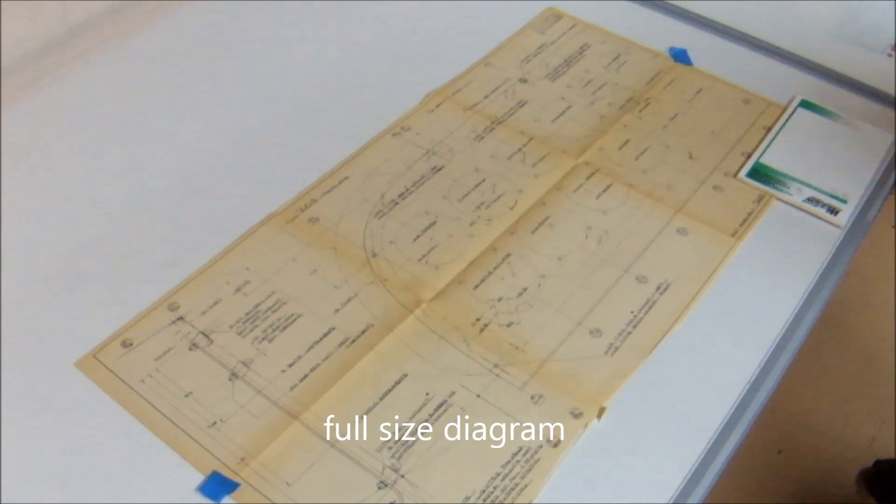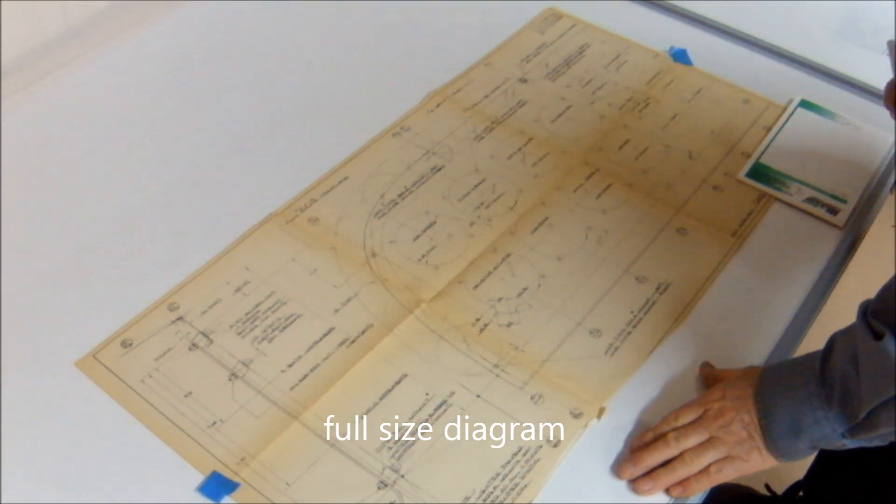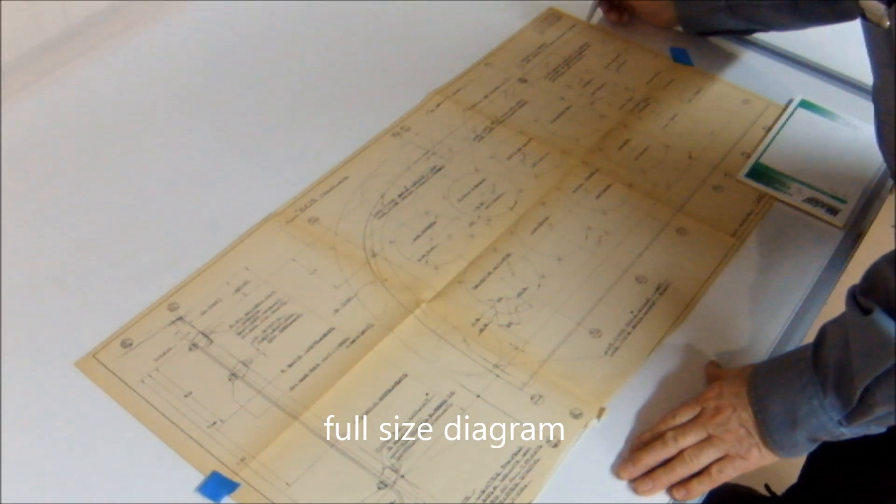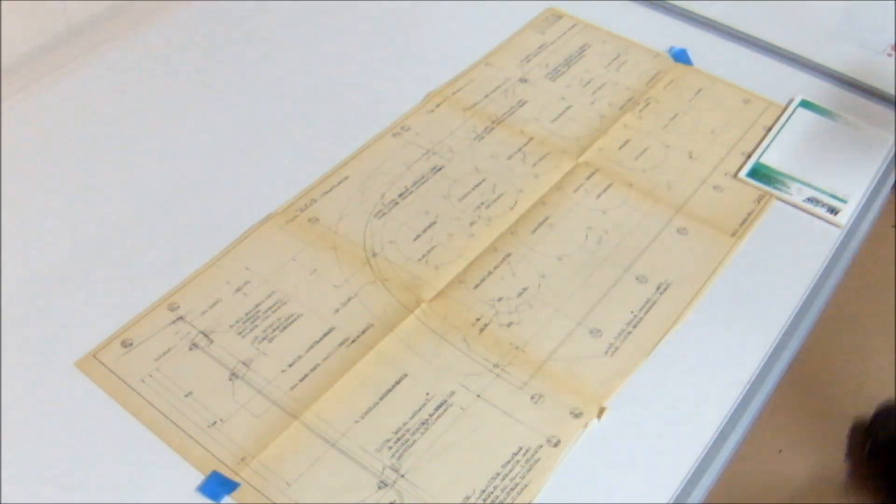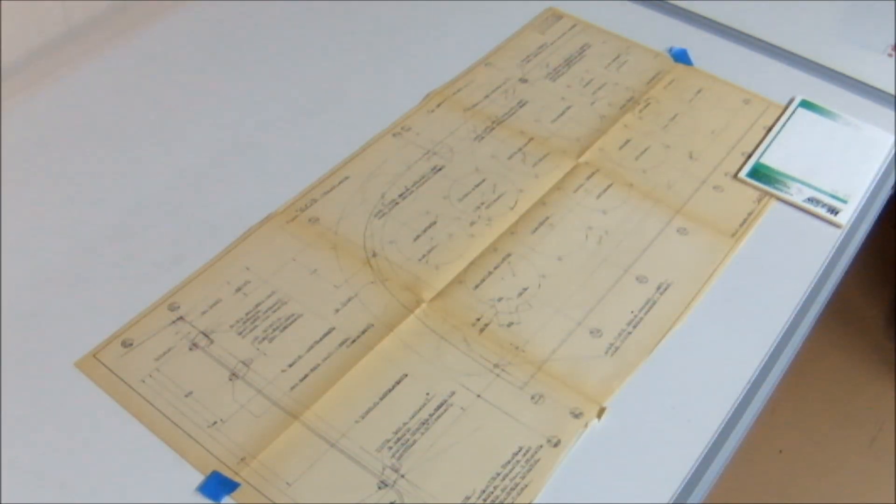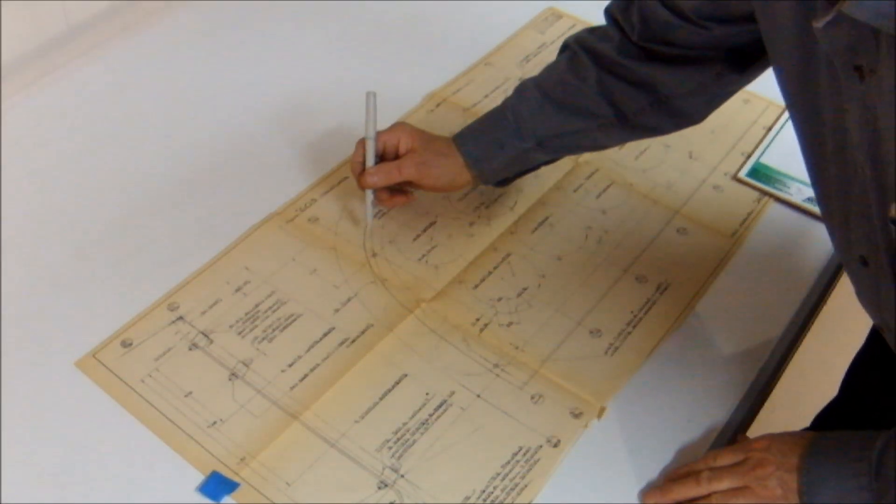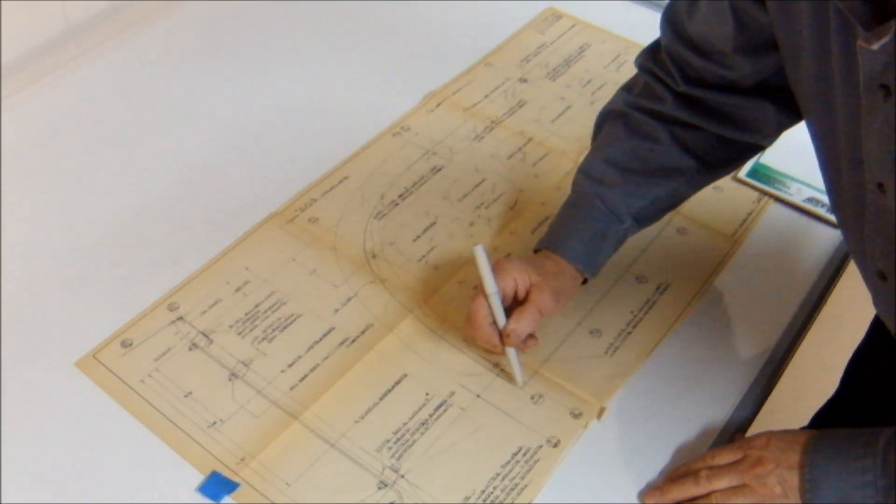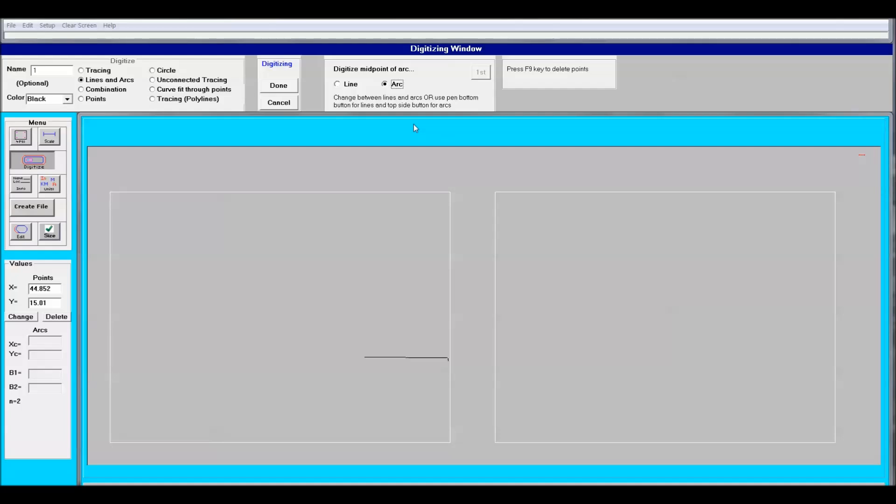The diagram is easy to follow. I selected the arc selection for this spot here. And I always check the Jumbo software screen just to make sure the diagram is coming along.